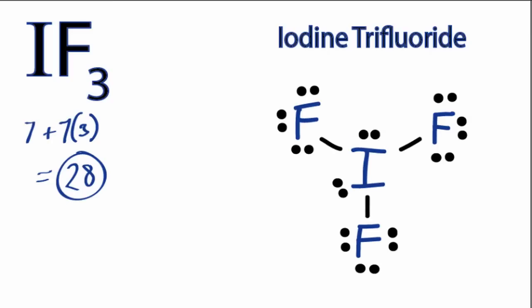So this is the Lewis structure for IF3. If you check your formal charges, you'll find they're all 0. We've used all the electrons that we started with. Everything has octets, and iodine has more than an octet, but that's okay since it's in period 5.